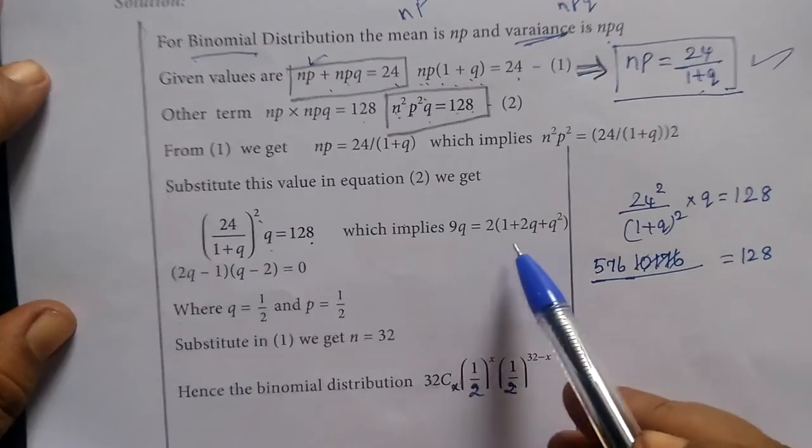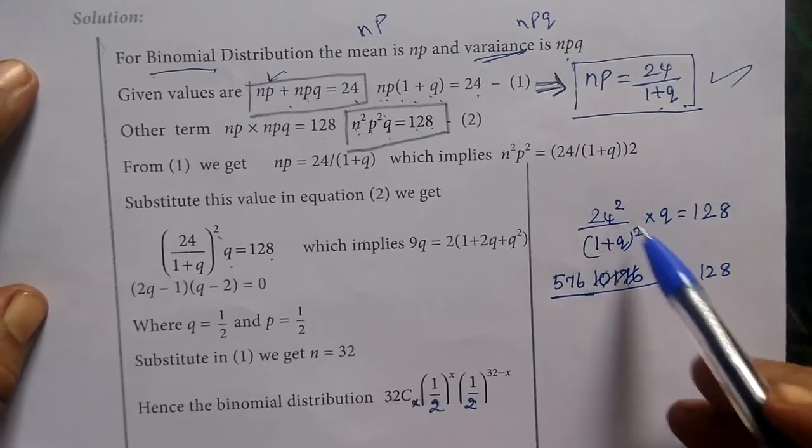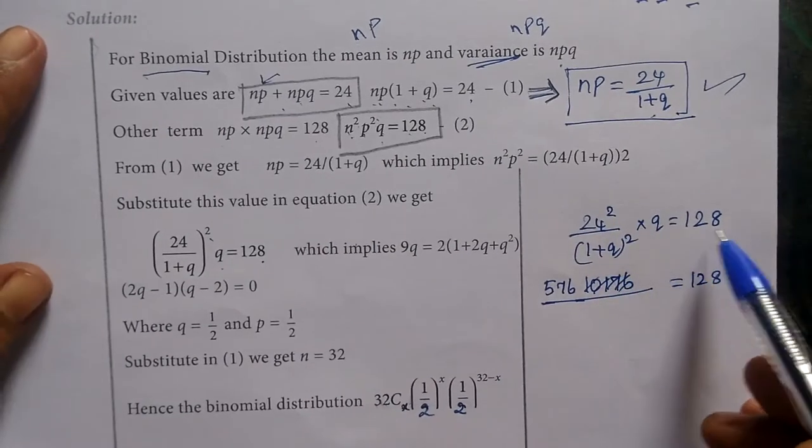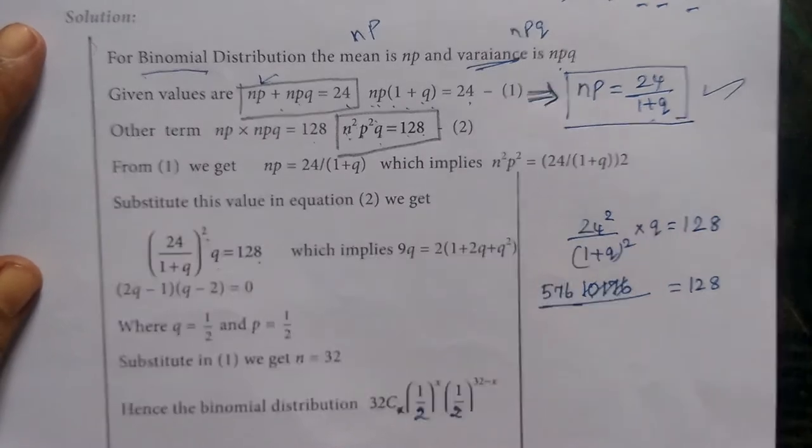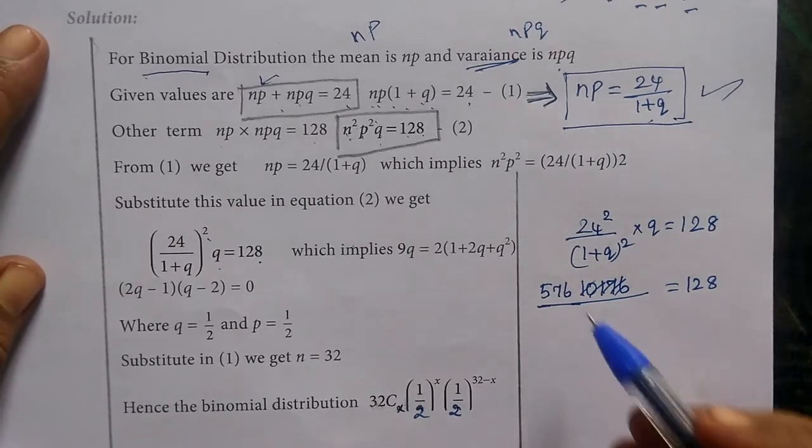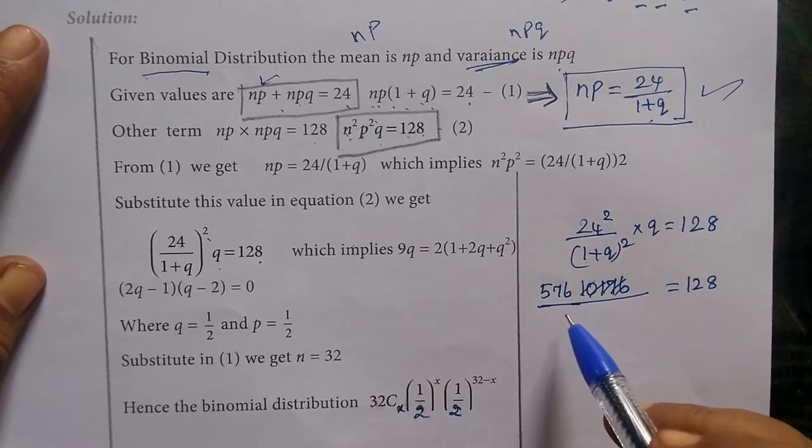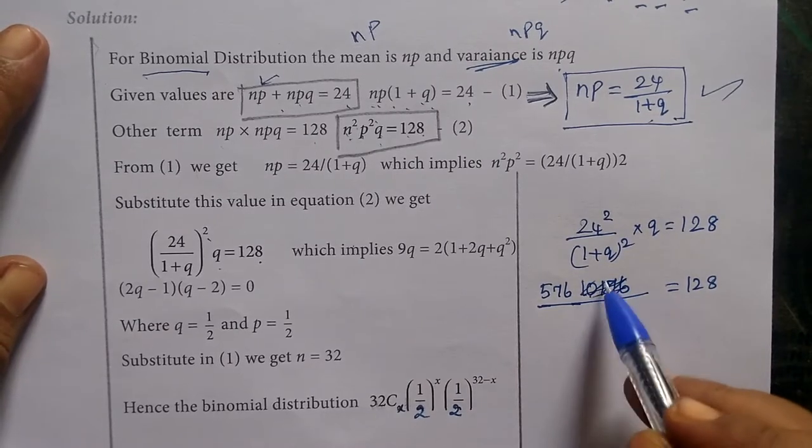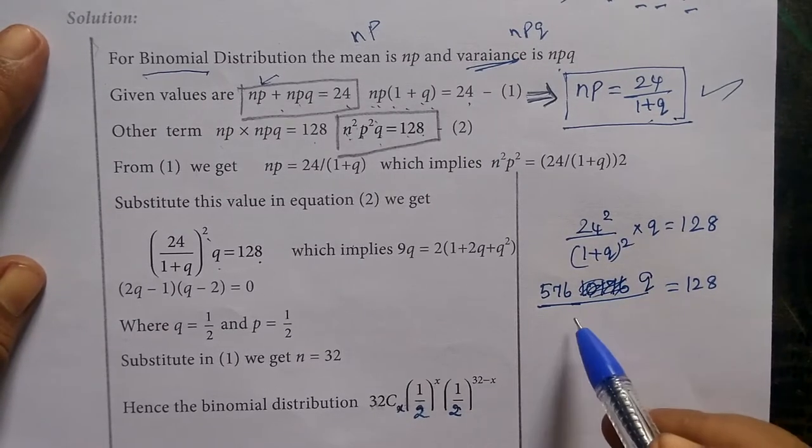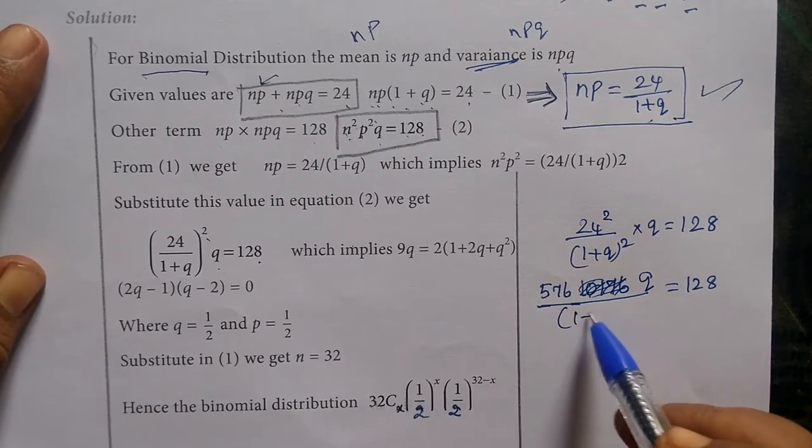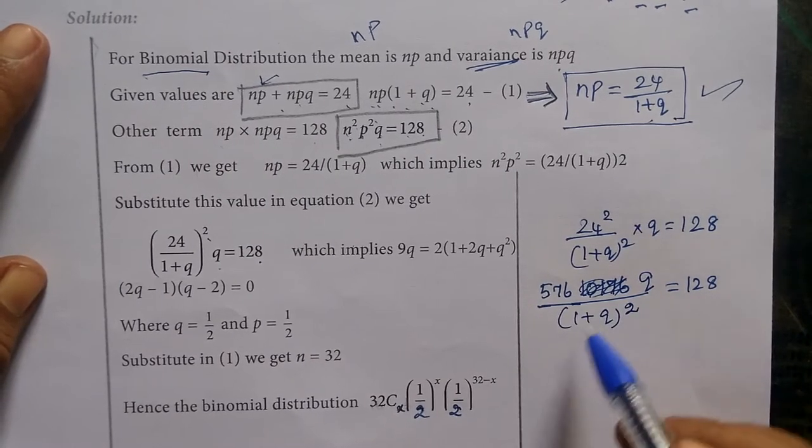This calculation: square q equals 128. So 24 squared is 576. This is how to look at it.